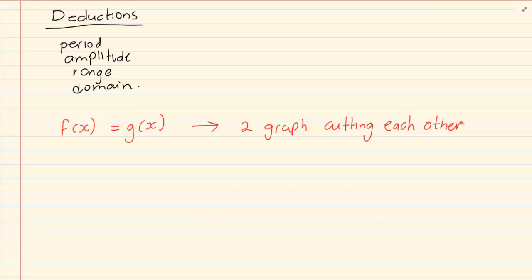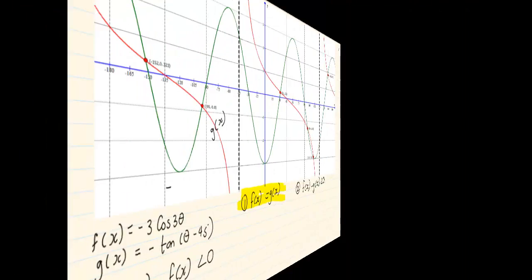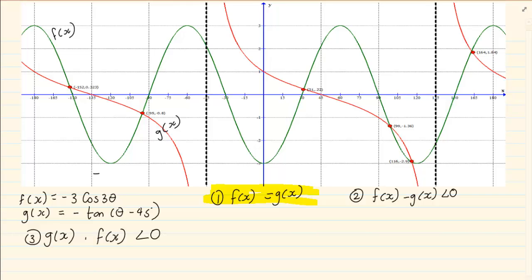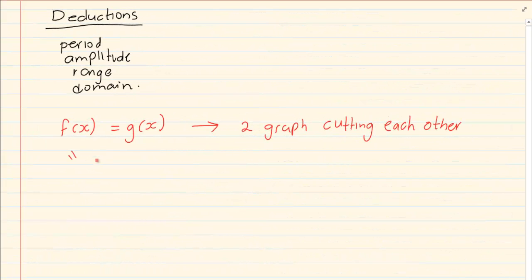It is a specific answer. It means you would say x is equal to this or x is equal to that. All deductions are usually linked to x. So when they give you deductions, they will always tell us the x value — and then they will give you a question. So deductions revolve around the x values.